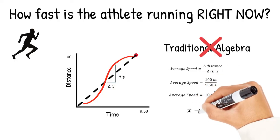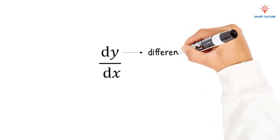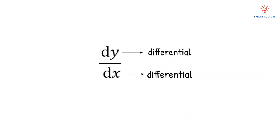You have to take the limit as delta x approaches 0 of your change in y over your change in x. When you do this, you're actually approaching the instantaneous rate of change — the instantaneous slope at a specific point on a curve, or alternatively the slope of the tangent line at that point. In calculus, this is known as the derivative. The notation we use is dy over dx, where dy and dx are both differentials. This formula refers to an infinitely small change in y over an infinitely small change in x, and it allows you to determine the instantaneous slope — in this case, the instantaneous speed of Usain Bolt right now.